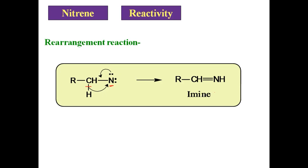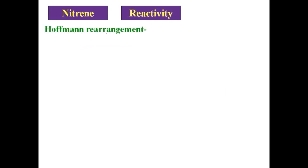Nitrene can easily undergo rearrangement reaction and there is formation of an amine intermediate. One more example of rearrangement reaction is the well-known Hofmann rearrangement — a good example of rearrangement reaction. This reaction also involves formation of nitrene as an intermediate. In Hofmann rearrangement, an amide on reaction with alkaline hypohalite gives the corresponding primary amine which has one carbon atom less. This reaction is called Hofmann rearrangement reaction. Now let us see the mechanism of this reaction.